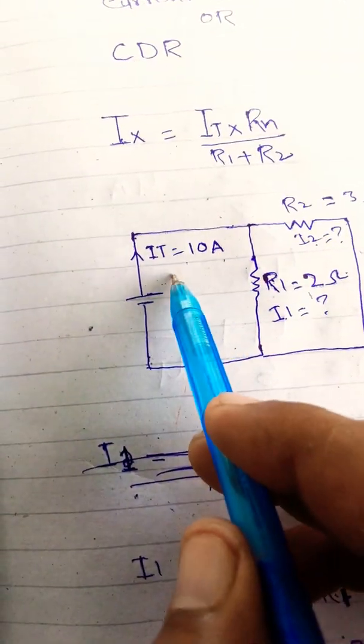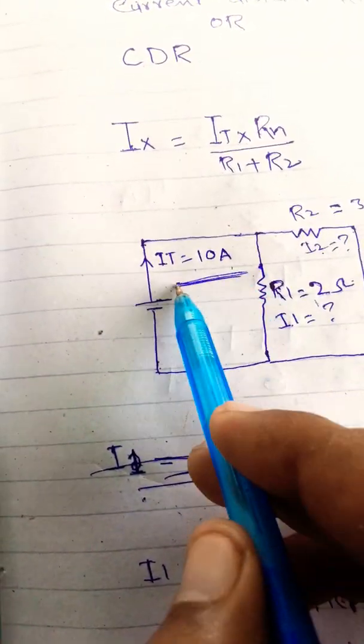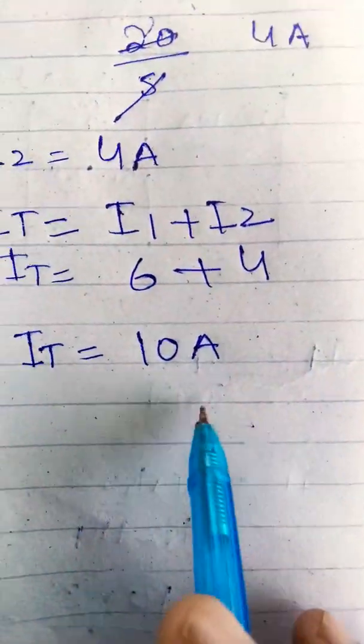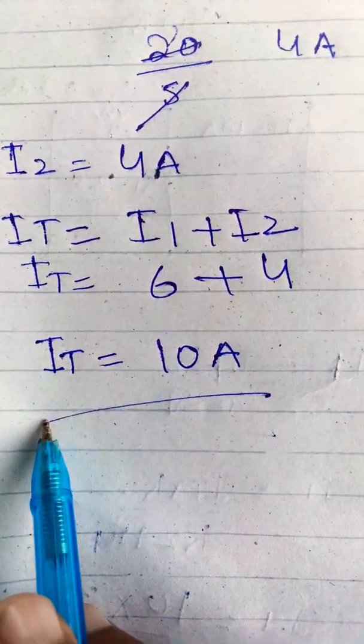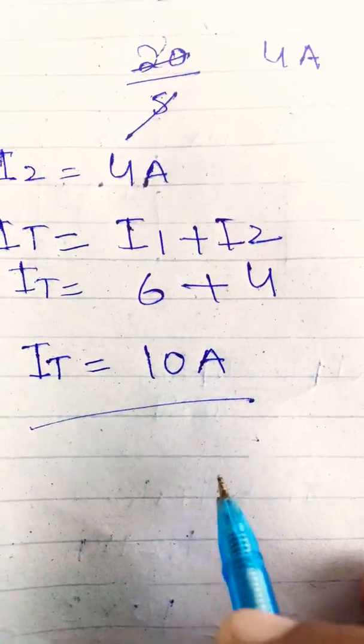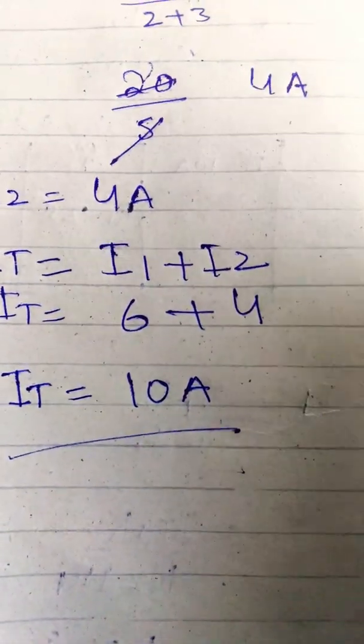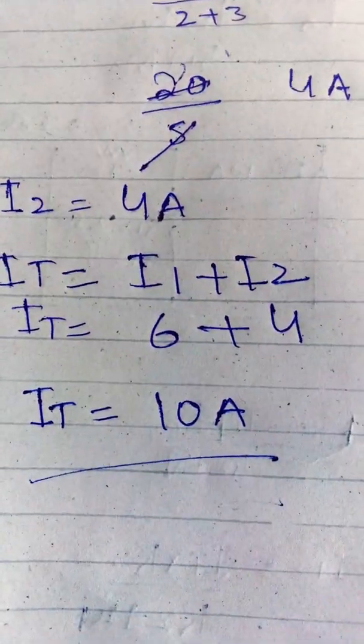We verify: total current iT equals i1 plus i2, which is 6 plus 4, giving us 10 amperes. This confirms the result, so CDR is proved.